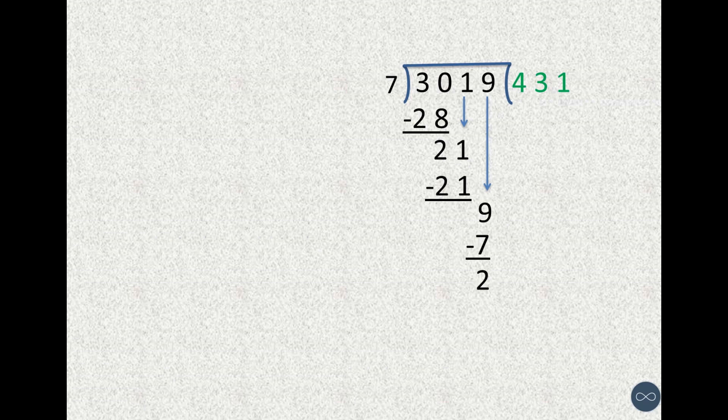First, let's take an example of a division solved question where 431 is the quotient and 2 is the remainder.